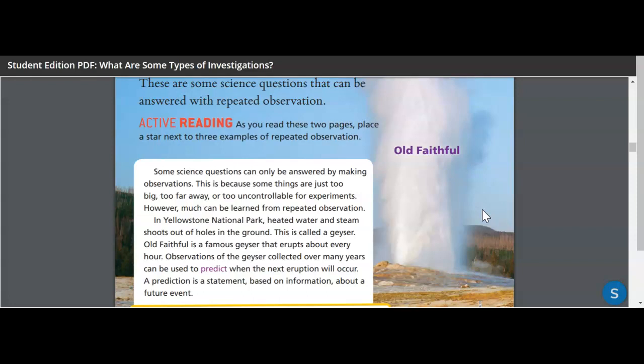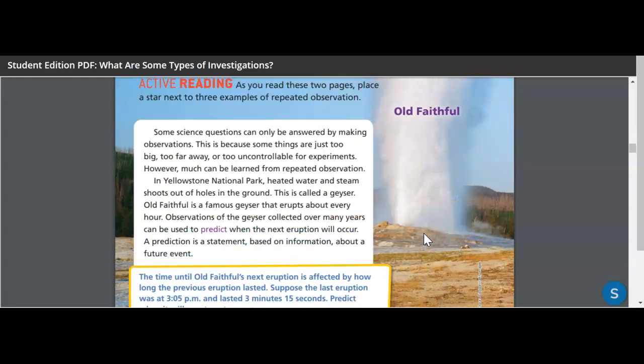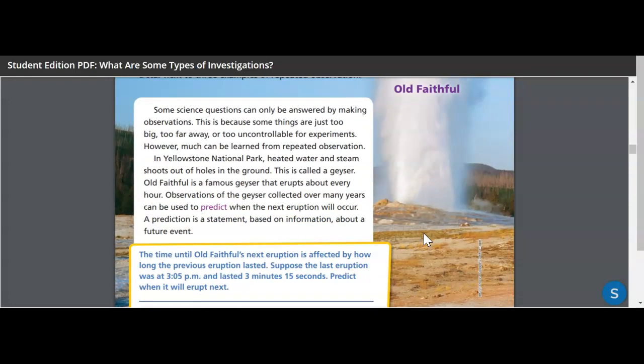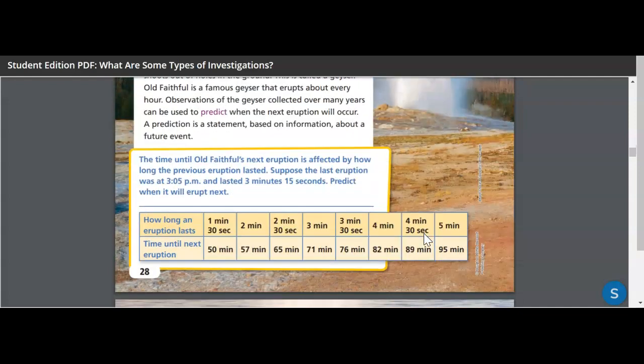So in Yellowstone National Park, heated water and steam shoots out of holes in the ground. This is called a geyser. Old Faithful is a famous geyser that erupts about every hour. Observations of the geyser collected over many years can be used to predict when the next eruption will occur. So predict means see what happens in the future based on what you are seeing now. That is a way that scientists can look at something as natural and as forceful as that without controlling it.